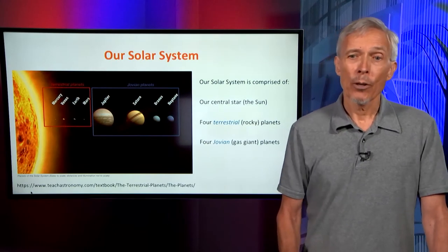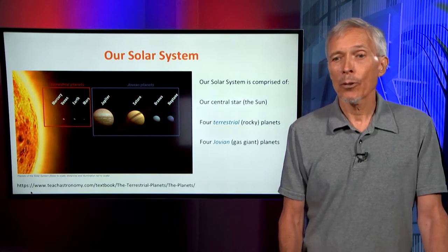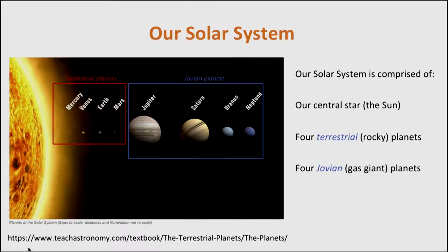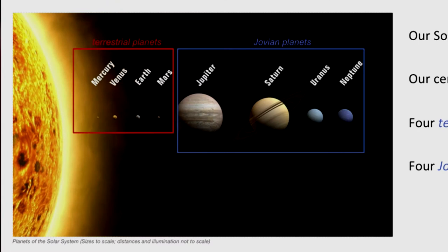In broad brush terms, our solar system is composed of the central star, the Sun, comprising 99.9 or more percent of all the material and composed almost entirely of hydrogen and helium, the four terrestrial or rocky planets, and the four Jovian or gas giant planets. There is quite a segregation in properties between these two classes of planets that we believe is associated with their process of formation.